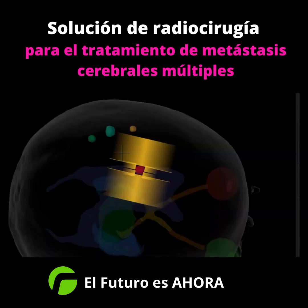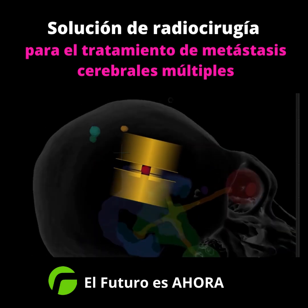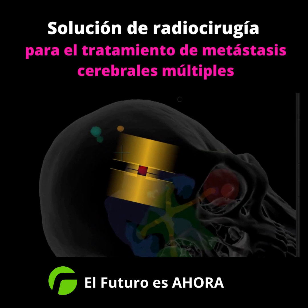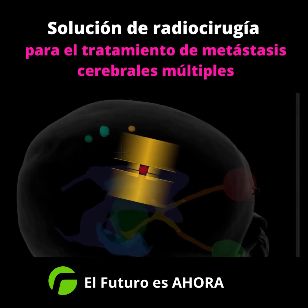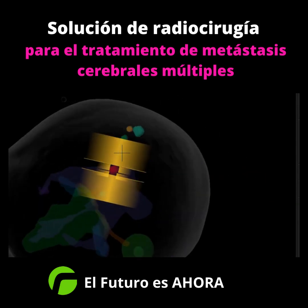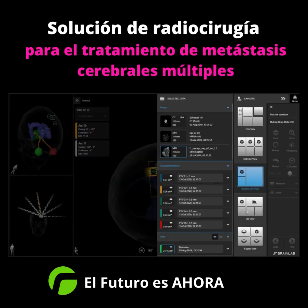What you can also see here is dynamic jaw tracking, now available not only in combination with the Elector MLC, but also for Varian. This further reduces the dose to normal tissue, and for Elector, also improves the field shaping for small lesions.